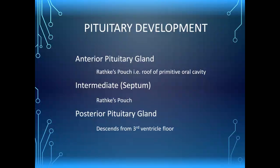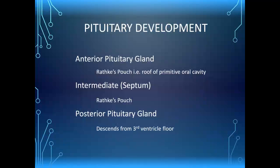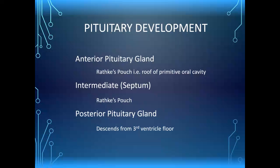Regarding pituitary development: the anterior pituitary gland starts at the roof of the mouth in Rathke's pouch and ascends from the primitive oral cavity. The septum between the anterior and posterior pituitary also comes from Rathke's pouch — an important concept when looking at pars intermedia cysts and Rathke's cleft cysts. The posterior gland, however, descends from the third ventricle, carrying all the fibers and vessels down to the pituitary gland. When the posterior pituitary doesn't descend, it leaves consequences that we'll see examples of.